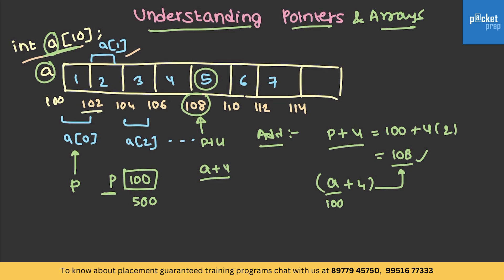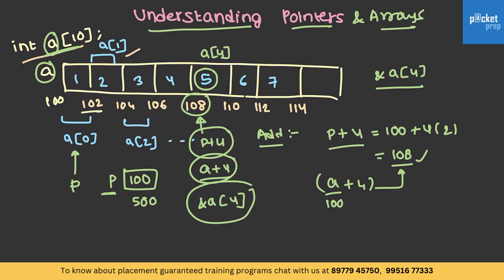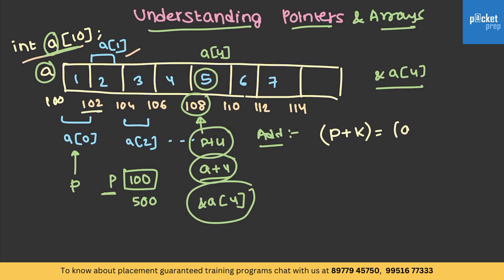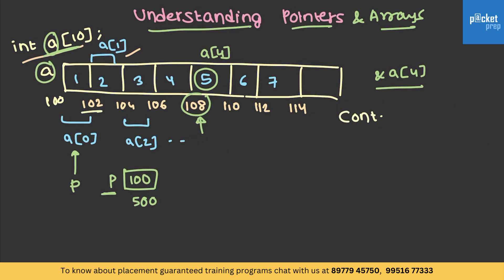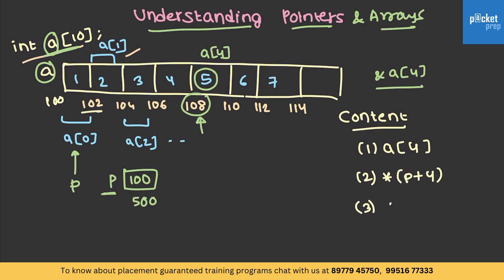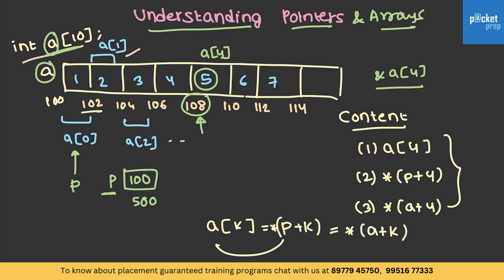This location can also be accessed with index A of 4, and the address can be obtained with the ampersand operator as &A[4]. So all of these represent the same address. We can write the statement: P plus K equals A plus K, where A is the array name and P is the pointer pointing to its base address, and it is also equivalent to &A[K]. For the content: A[K] is equivalent to *(P+K) and also to *(A+K). All three are equal. I think you now have a clear idea to understand pointers and arrays together.